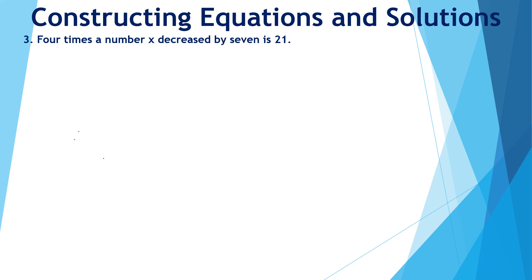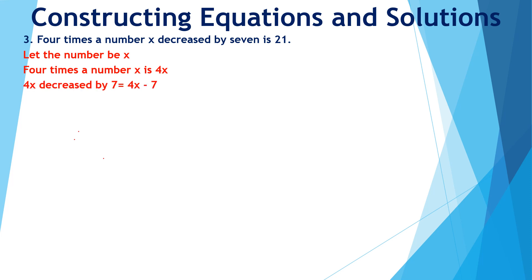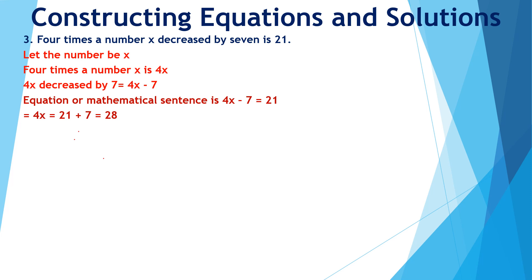4 times the number x decreased by 7 is 21. Let the number be x. 4 times the number is 4x. 4x decreased by 7 will be 4x minus 7, and it is equal to 21. So the mathematical sentence is 4x minus 7 is equal to 21. On solving this equation, we get x equal to 7. So the required number is 7.